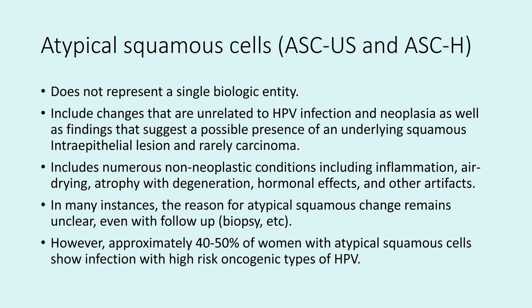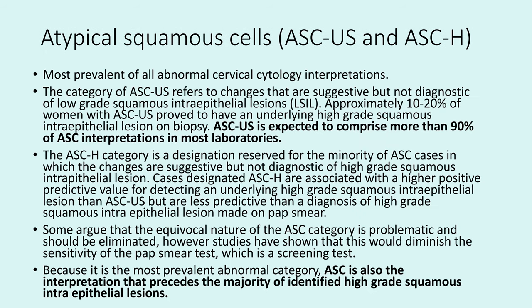Approximately 40% to 50% of women with this diagnosis show infection with a high-risk type of HPV. The atypical squamous cell diagnosis is the most prevalent of all abnormal cervical cytology interpretations. The ASCUS category refers to changes that are suggestive but not diagnostic of low-grade. Approximately 10% to 20% of women with ASCUS prove to have an underlying high-grade squamous intraepithelial lesion on biopsy — that's important to note. ASCUS is expected to be about 90% of the diagnoses in the atypical squamous cell category.